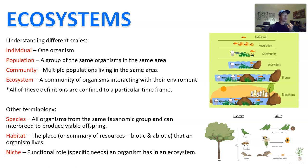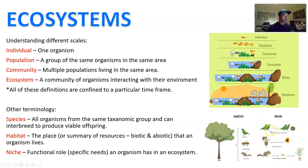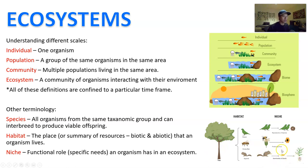If something is a niche, it's really a specific need or specialization. For example, this tree is a habitat to three species: the parrot, the honeybee, and the squirrel. They live in the same habitat but don't have the same niche. The parrot specializes in using the tree for reproducing — having a nest. The bee's niche might be producing food in the form of a beehive in the tree. The squirrel might use the seeds from the tree as food. Those are all different niches within the same habitat.